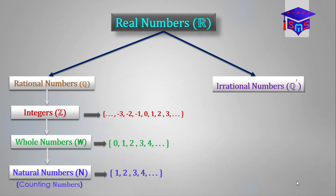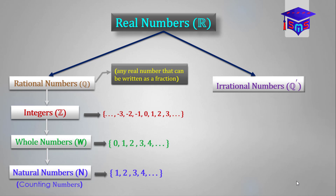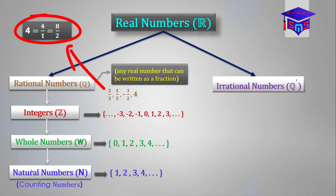Now let's talk about the set of rational numbers. Any real number that can be written as a fraction is a rational number, or any real number that can be written in the form A over B. Some examples are two-thirds, one-fifth, negative one-half, and then 4. Yes, 4 is a rational number — it can be written as 4 over 1 or 8 over 2.